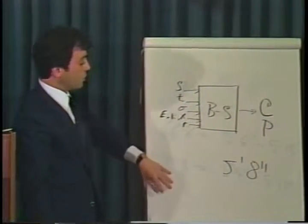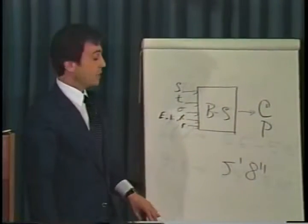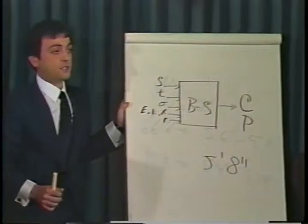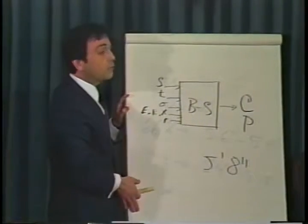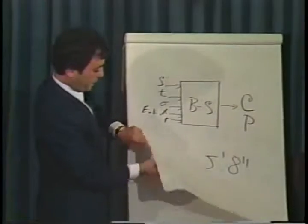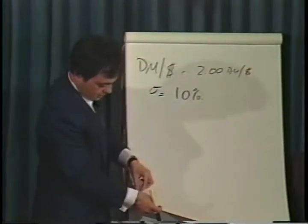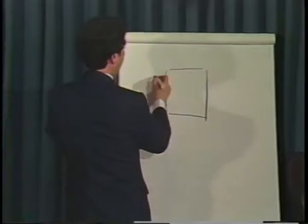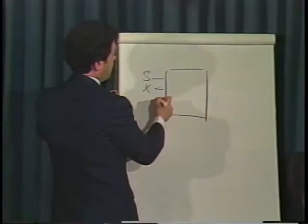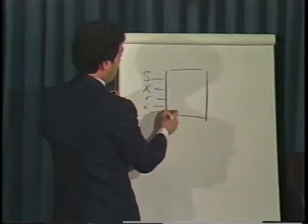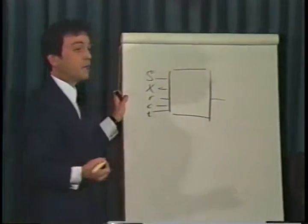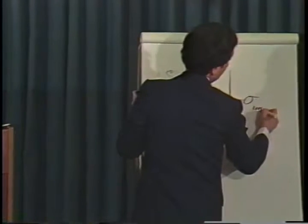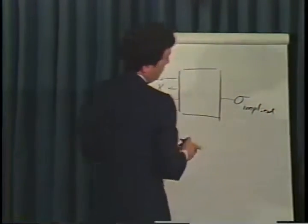This Black-Scholes model can be used in reverse as well. That is to say, you can put as one of the inputs either the call price or the put price. In your black box, you can have the underlying security price, the strike price, the interest rate, the call price, and the time to maturity — and what comes out is volatility. The output will be volatility, and that is usually called implied volatility, or sigma implied.